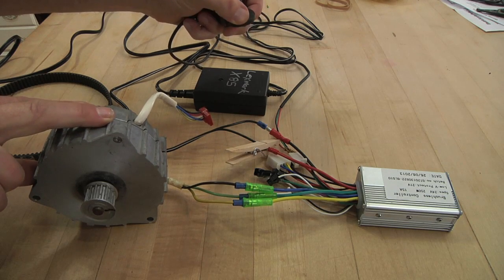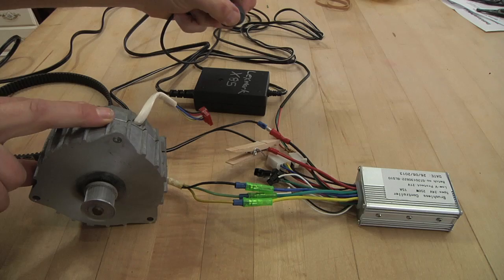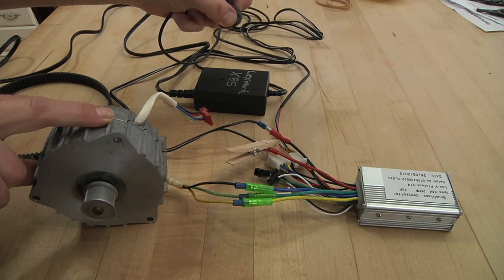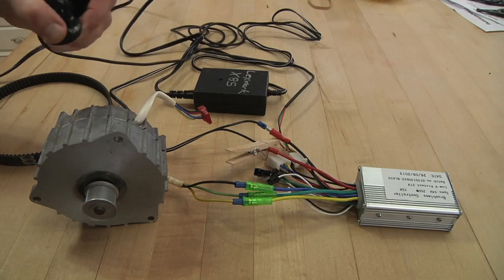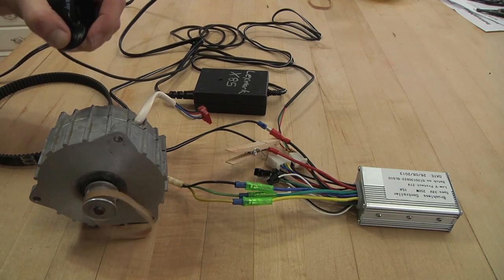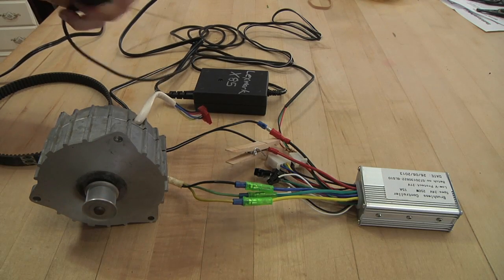So you should be able to see that that does spin clockwise, which would be forward on the scooter. And it's maybe even a little easier to see if I put a rubber band or something on there. And off it goes.